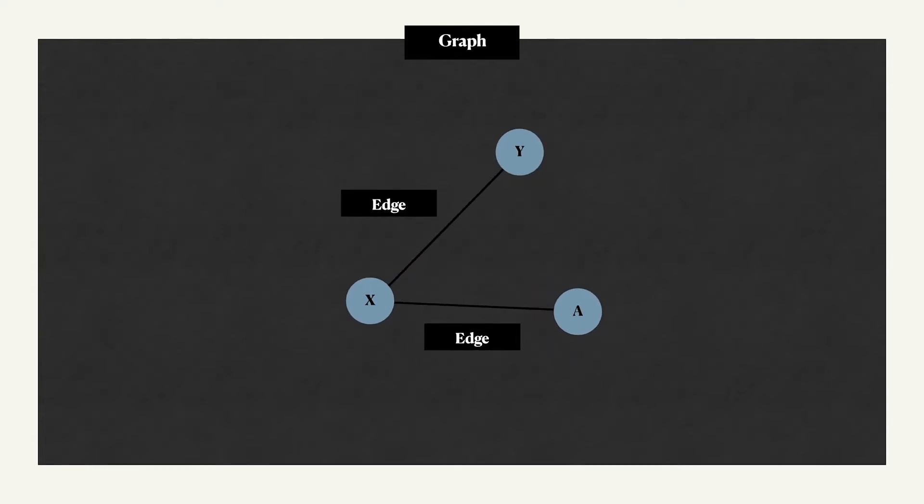These nodes are connected by edges, also known as lines or arrows. A graph data structure can be directed or undirected, where in a directed graph, edges have direction, and that's why they are called arrows sometimes.